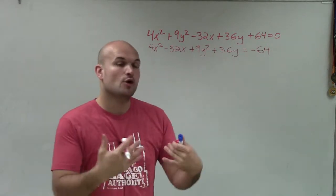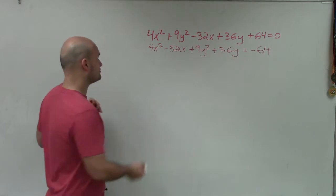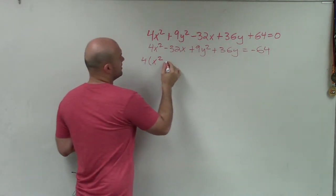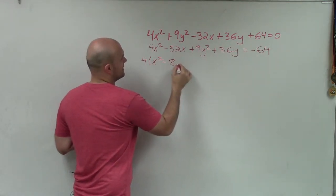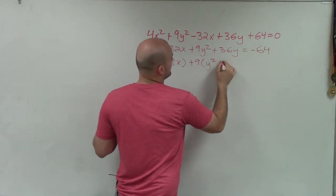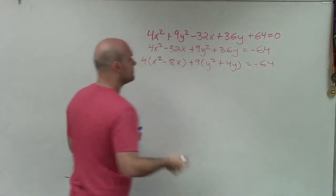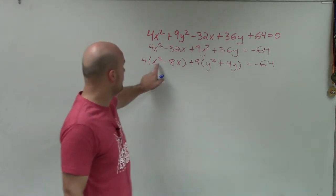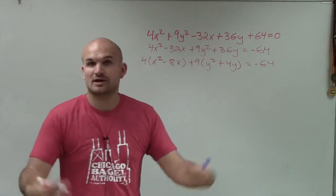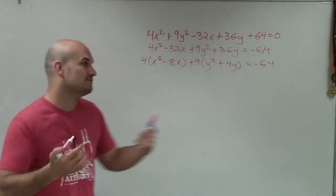When completing the square, we want to factor out the coefficient of our quadratic term. I'm going to factor out a 4, leaving me with x² - 8x. Here, I can factor out a 9, so I'm left with y² + 4y equals -64. Perfect. Now I have a coefficient of 1, and I can apply completing the square to produce a perfect square trinomial. Once I've produced a perfect square trinomial, I can factor it to a binomial squared.